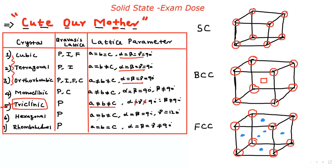Hexagonal and tetragonal are similar in that a = b ≠ c. But importantly, in the seven crystal systems, hexagonal is the only one with a 120° angle — gamma equals 120, while alpha and beta equal 90. Rhombohedral is almost like the cube: a = b = c, but alpha = beta = gamma ≠ 90.